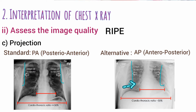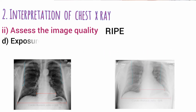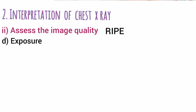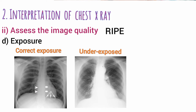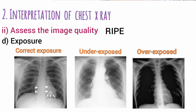Heart size is magnified in AP view, so you should never consider the heart enlarged if the projection used is AP. For exposure, ideally you should be able to see the heart, blood vessels, bones, and vertebrae visible behind the heart. If the film is underexposed these structures won't be visible; if overexposed, details of bone structures will be lost.